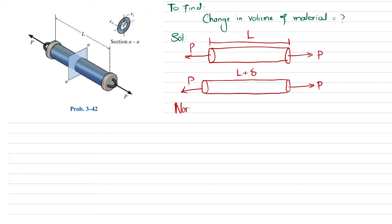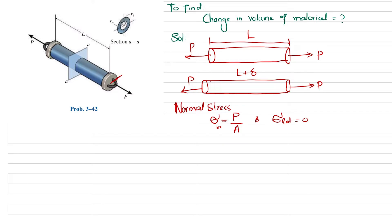Normal stress (longitudinal stress) is equal to P divided by A. The lateral stress is equal to zero. Longitudinal means along the axis, and lateral strain is in the transverse direction — that lateral stress equals zero while we have stress in the longitudinal direction.